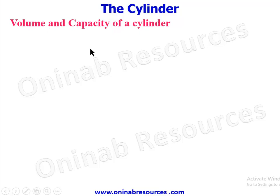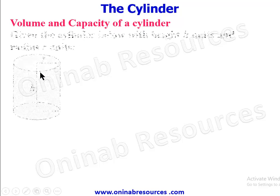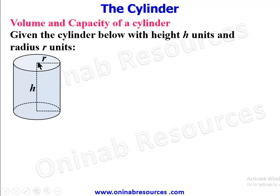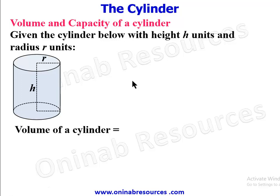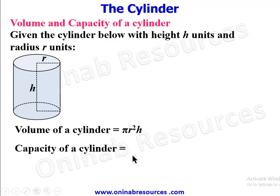We go to volume and capacity of a cylinder. Maintaining the same cylinder of height h units and radius r units, the volume of a cylinder is base area multiplied by the height. The base is a circle, which is πr², multiplied by the height, giving the formula for the volume of any cylinder: V = πr²h.